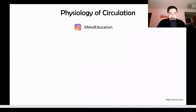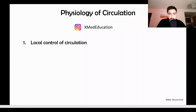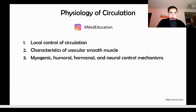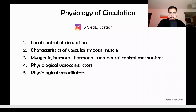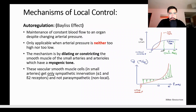In this video we're going to talk about the physiology of circulation, specifically local control of the circulation, characteristics of vascular smooth muscle, myogenic, humoral, hormonal, and neural control mechanisms behind this local control of circulation, physiological vasoconstrictors and physiological vasodilators. Let's start with the first slide about local control.